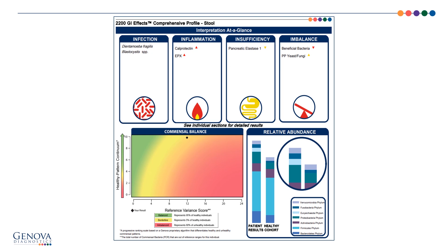Looking at the four pillars at the top of the page, he has some parasites in the infection box, significant inflammation, digestive insufficiency with a slightly low pancreatic elastase, and microbial imbalance with low beneficial bacteria and potentially pathogenic yeast. His commensal balance is in the yellow, almost into the red zone, and he has high relative abundance suggesting overgrowth. So with all of these findings, where do we start?